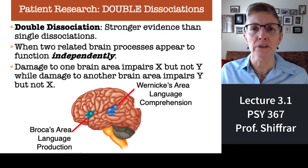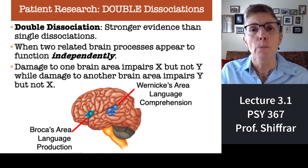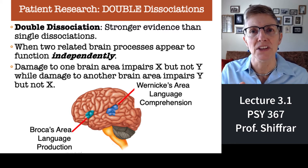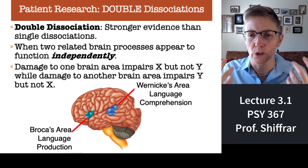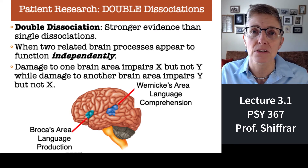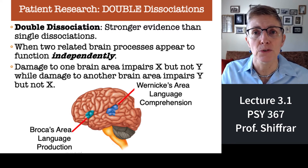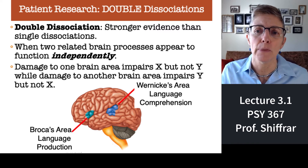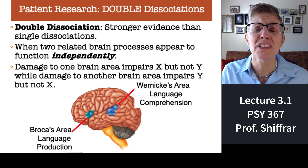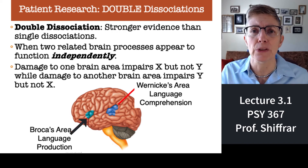Double dissociations are important and have played a key role in cognitive psychology because they suggest some independence of processing — maybe not only separation, but that these abilities actually rely on completely independent or separate processes. A really good example of a double dissociation has to do with language. As you can see in the cartoon picture of the brain here, I'm pointing to two different parts: Broca's area and Wernicke's area.